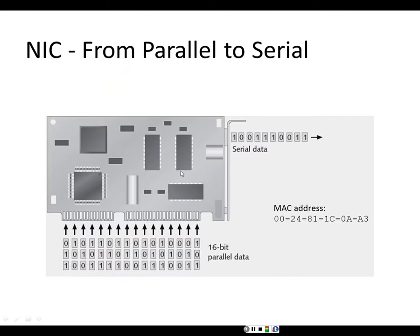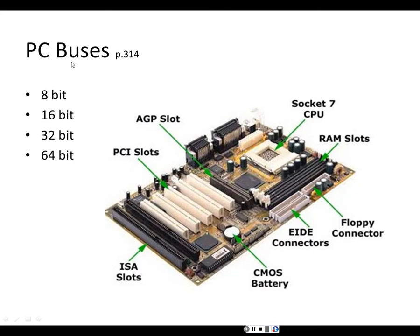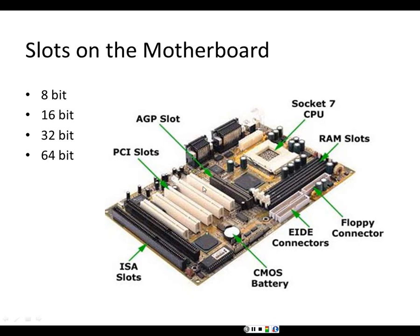So a network interface card converts the parallel signal — how the computer runs internally — to a serial signal, which is how computers communicate externally. When they talk about PC buses like 8-bit, 16-bit, and 32-bit, they are talking about the different types of slots on the motherboard. These different slot types are called PC buses.